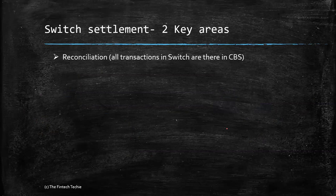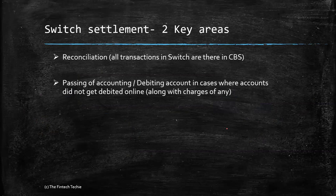If there is any discrepancy, it is flagged off for manual correction. The other important key area is passing accounting entries or debiting the account in cases where accounts are not debited online.